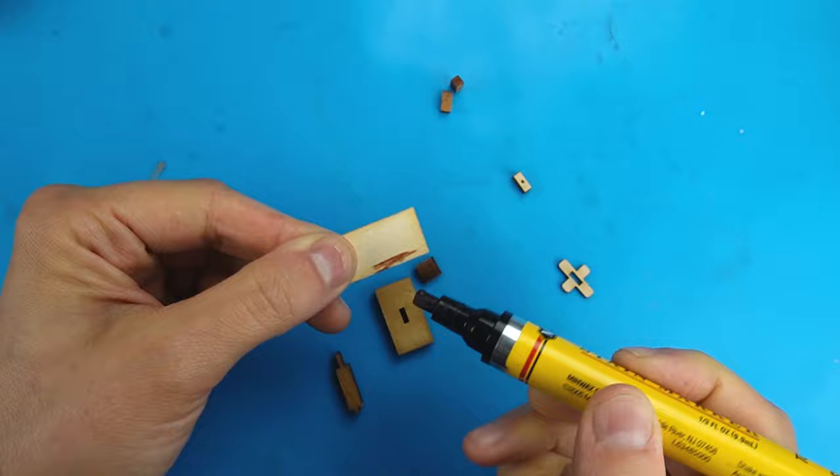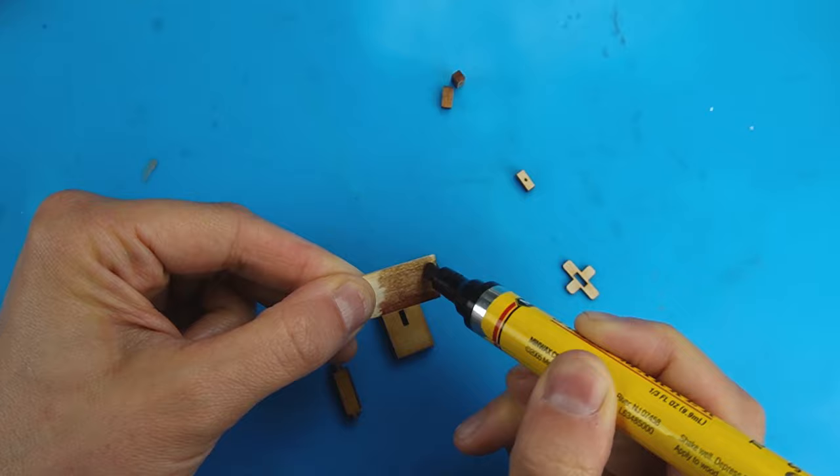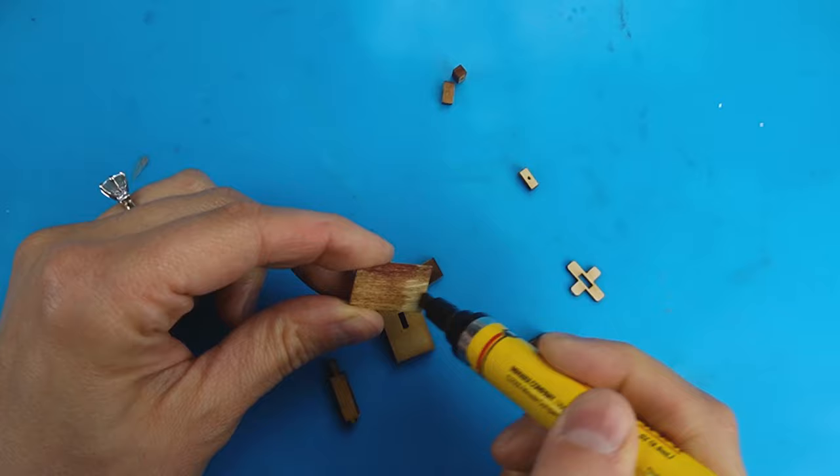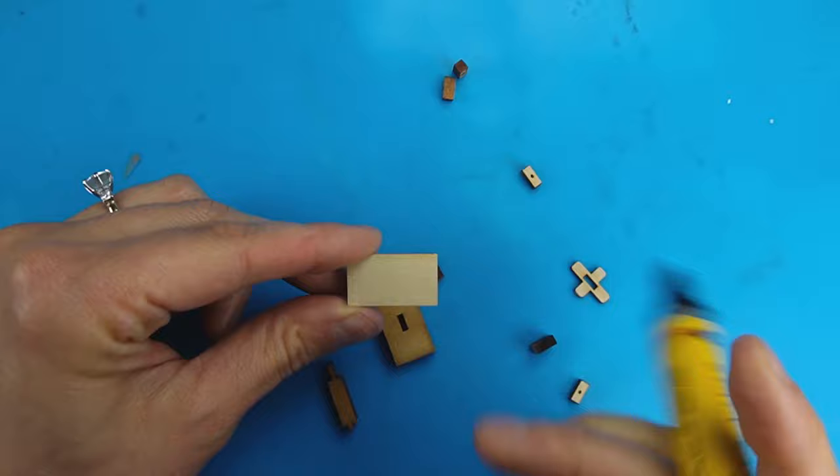The instructions in the kit suggest staining the wood pieces before assembly, so I'm using my Minwax stain pen. I usually use watered down paint as stain since stain gives off an odor I don't like, but I really love the convenience of these pens for small projects like this.